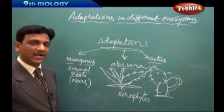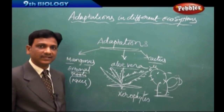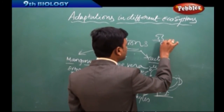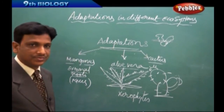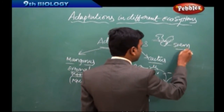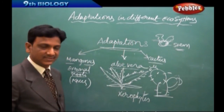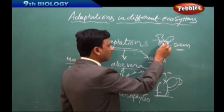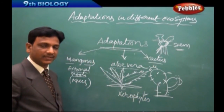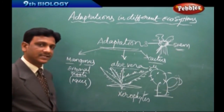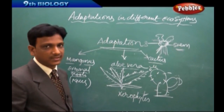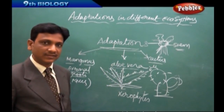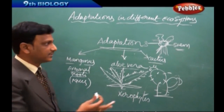Certain plants show adaptations to live in water. Water hyacinth, for example, floats on water because its stems have many air spaces. Because of these air spaces the plant is able to float — roots remain in the water and leaves are out in the air, allowing sunlight for food preparation and absorption of nutrients. This floating adaptation is characteristic of water hyacinth.